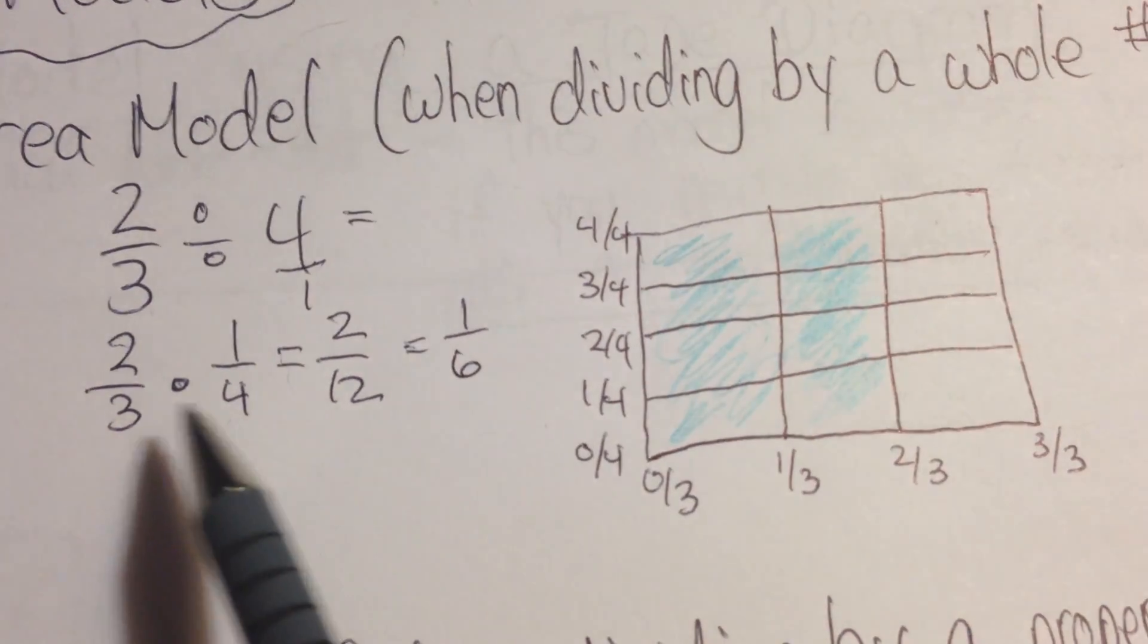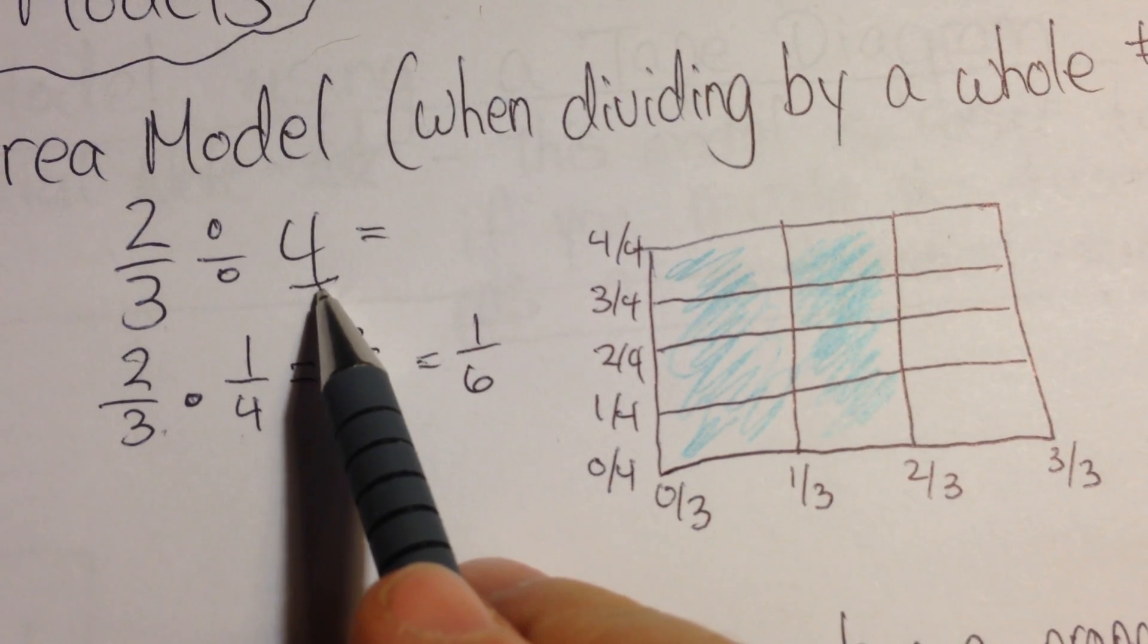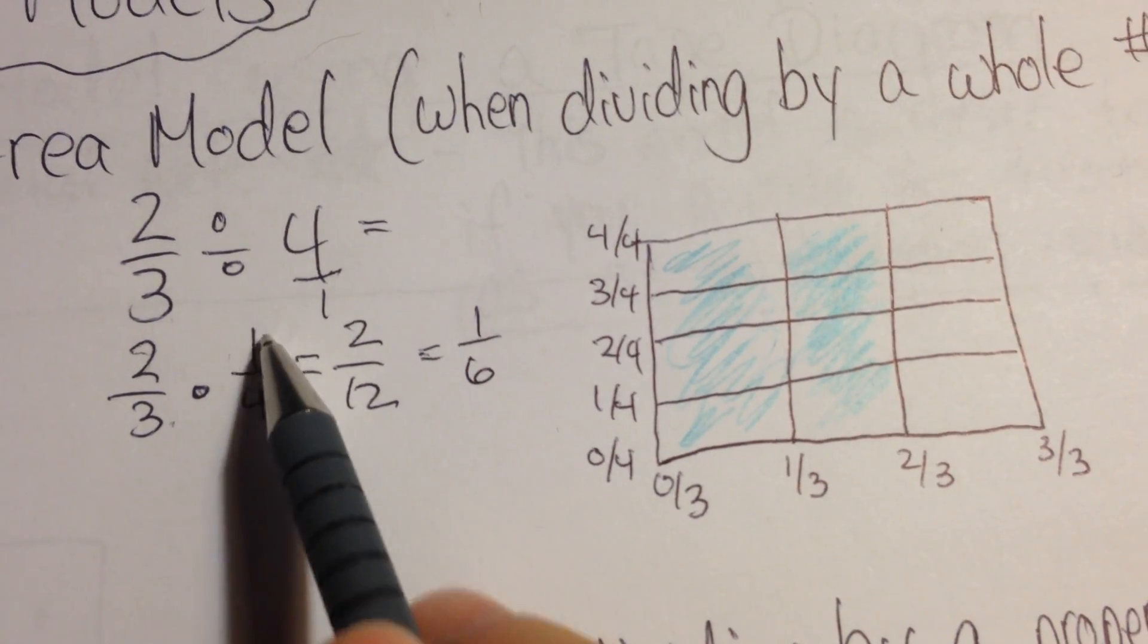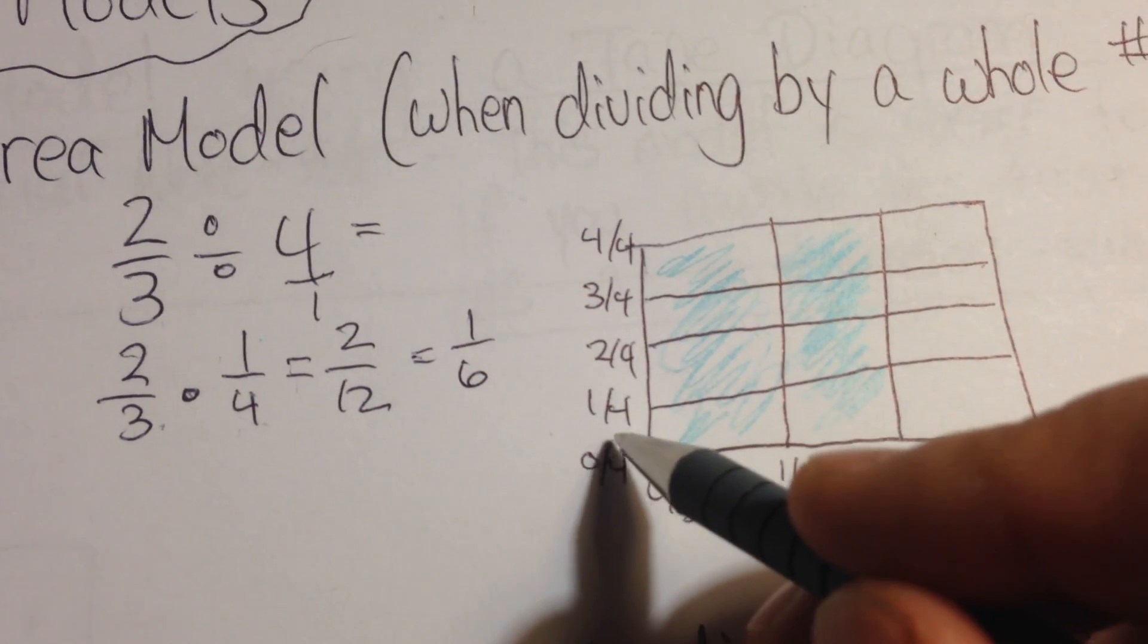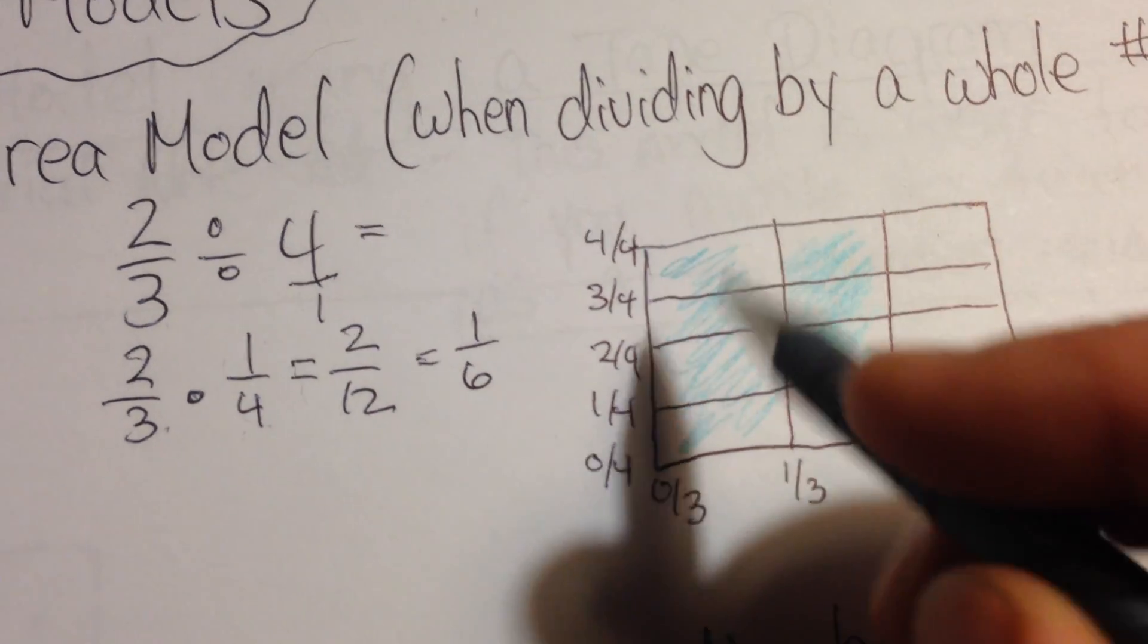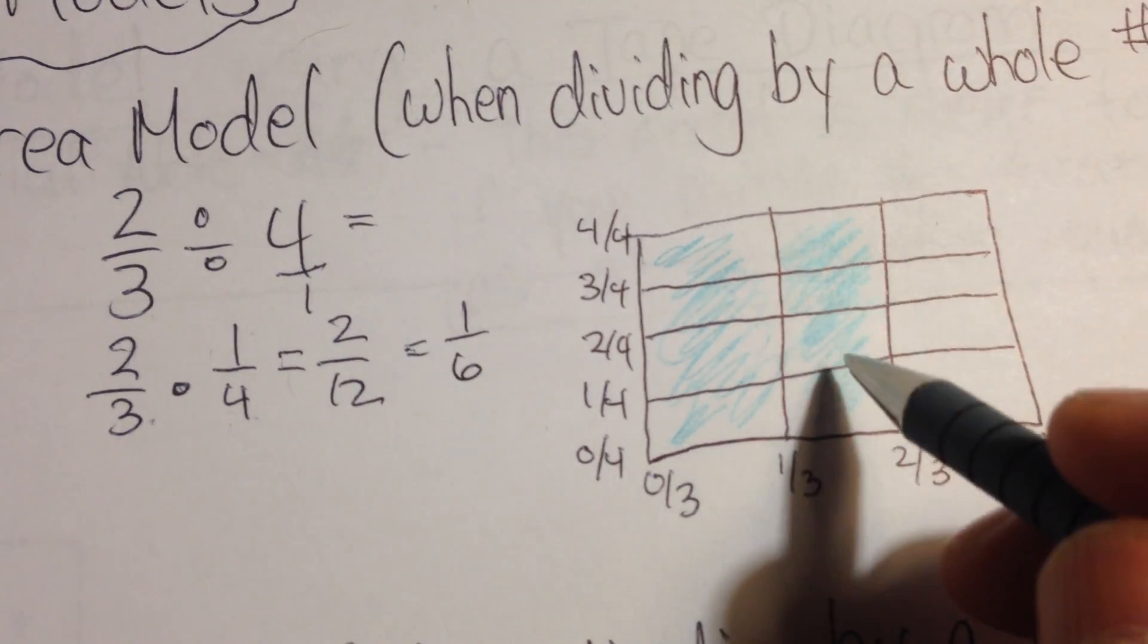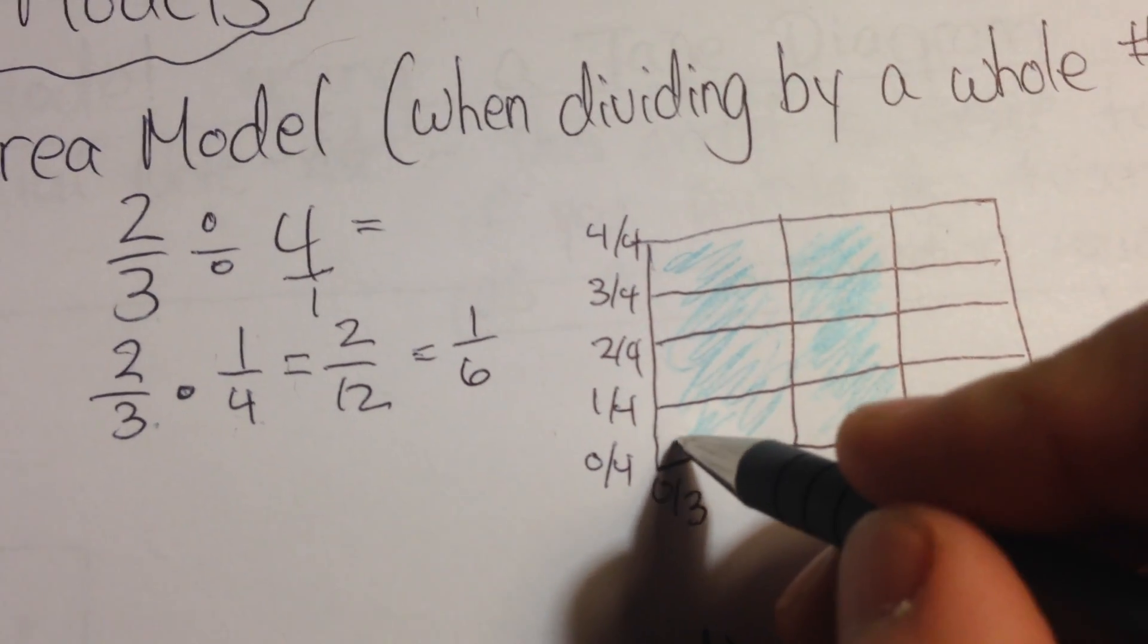Now the thing is I have 2/3. I'm dividing it into 4 groups. But when you look at my multiplication I only have 1 of the 4 groups. So if I look at this I need to take 1/4 and I could shade it across. I do have another colored pencil but I'm just going to put a swirl through this. I had 2/3 shaded vertically. Now I'm going to shade 1/4 horizontally.